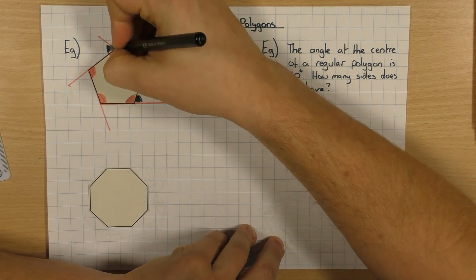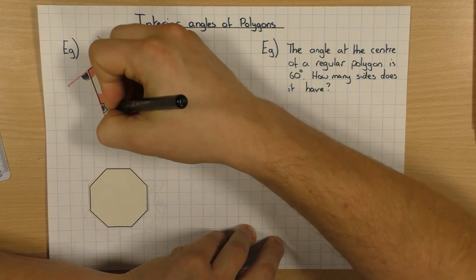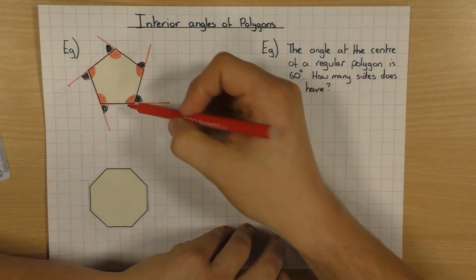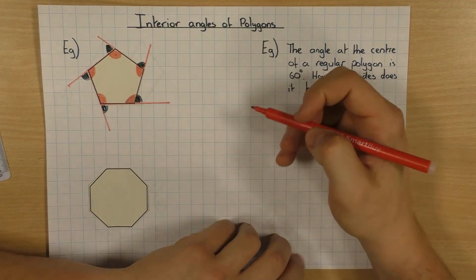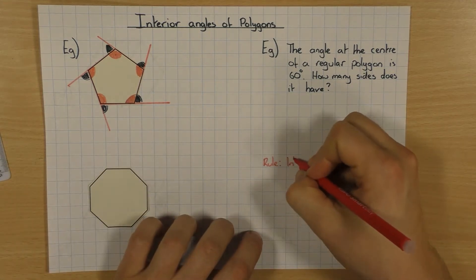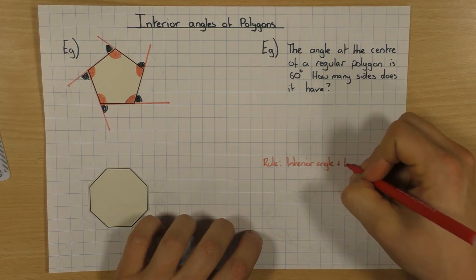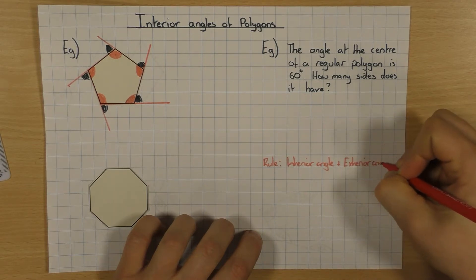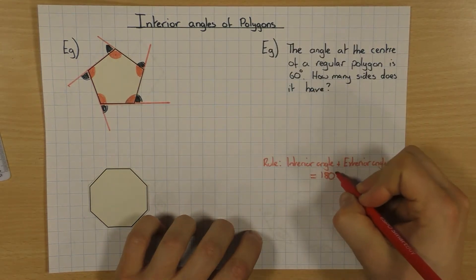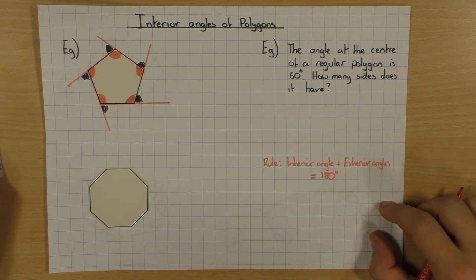To work out exterior angles, you can have a look at my exterior angle video. Just so you know: interior angles are inside, exterior angles are on the outside if you extend all the sides. A key rule to spot is that the interior angle and the exterior angle are on a straight line, so when you add the two together they equal 180 degrees. That's the first fact that's always handy to know.